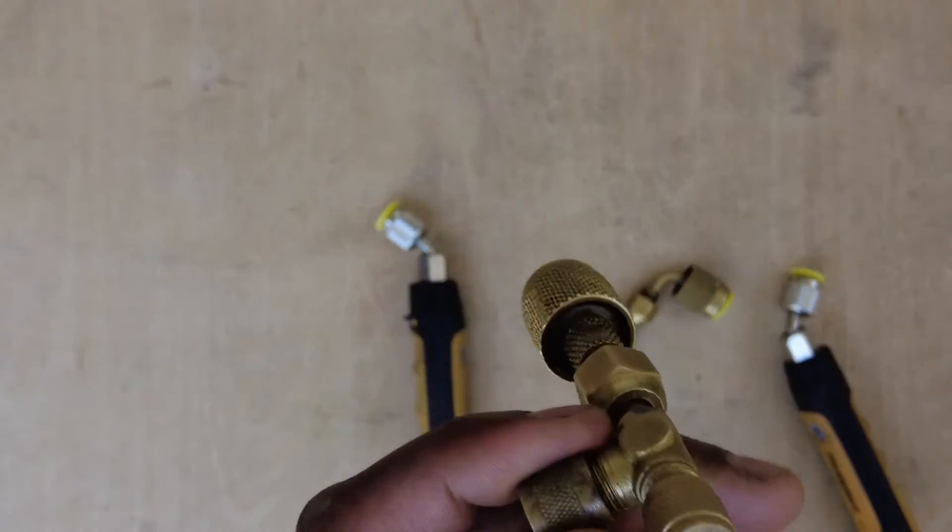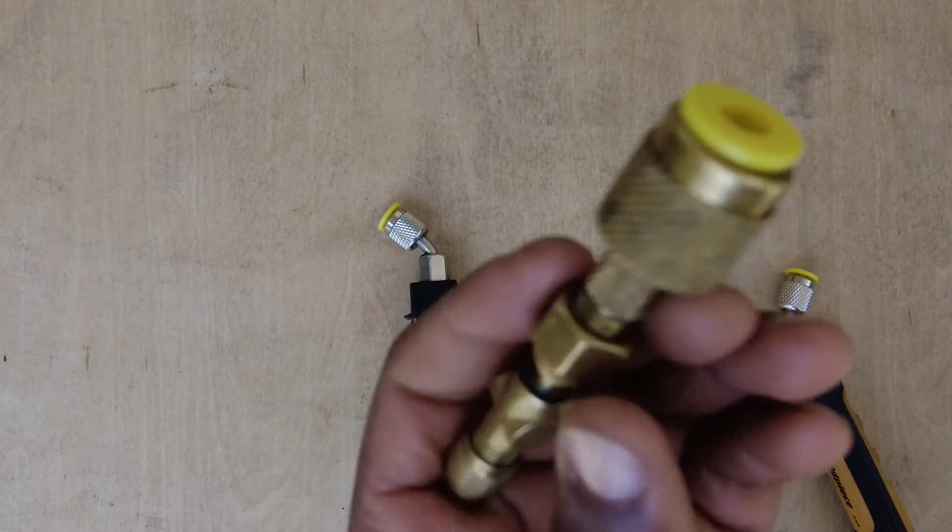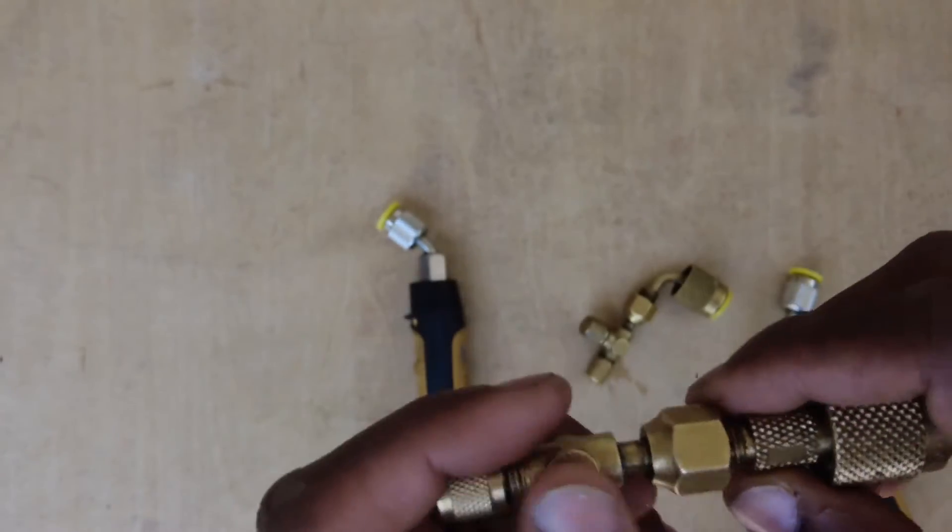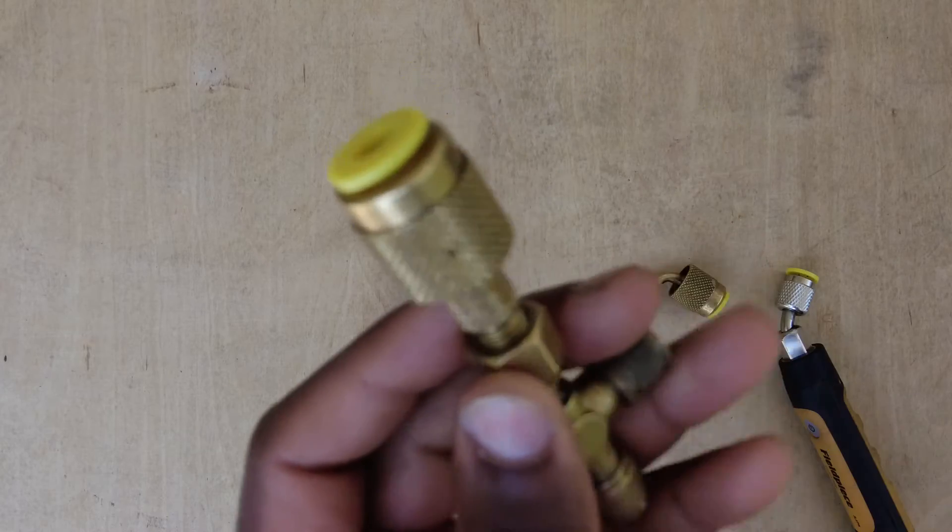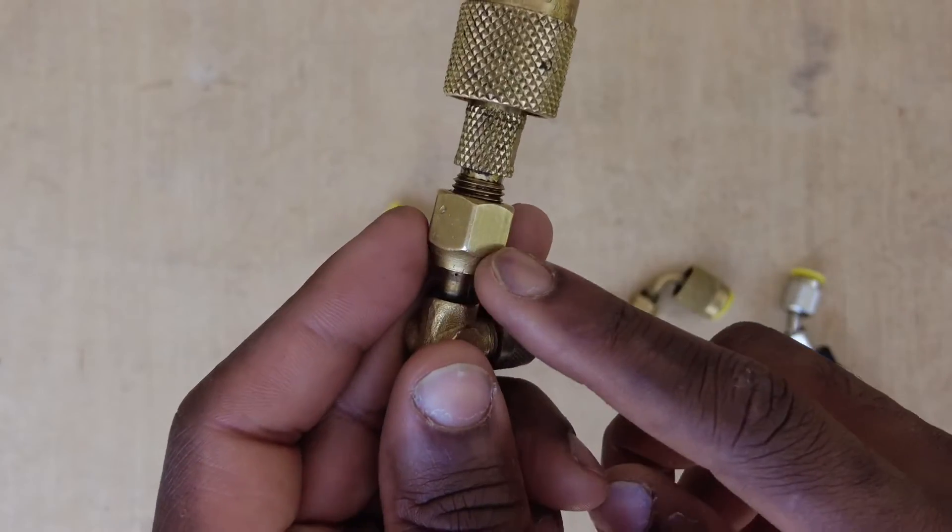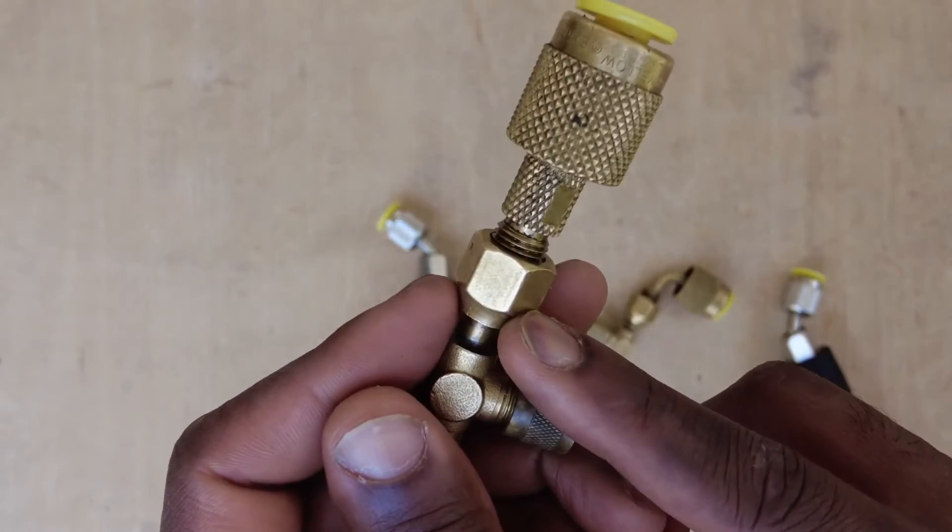So I put some of the standard Schrader cap O-rings. I don't want to take it out, but just trust me there's some Schrader cap O-rings between this here and this flared flare lock nut here.